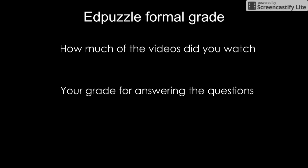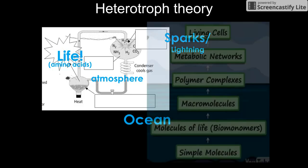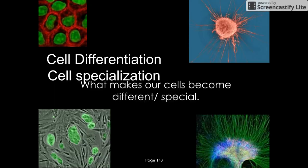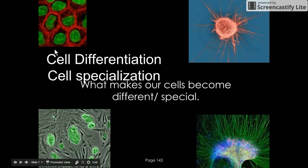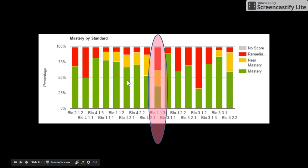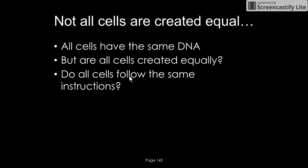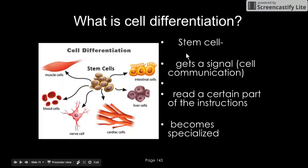We started off trying to figure out cell differentiation and cell specialization - how do you make different cells in your body? We know that all cells have the same DNA, but they're not different themselves. They start off with no jobs and then get a signal to become specialized or differentiated.